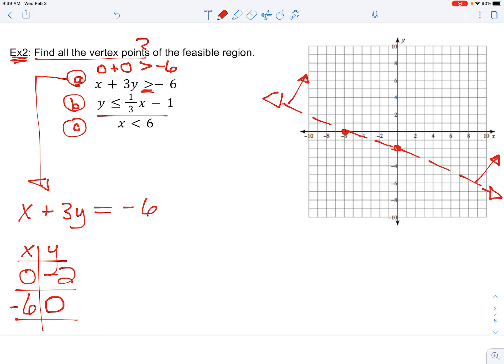The y-intercept is negative 1. And then 1 third is the slope. Rise over run. 3 over, 1 up. 3 over, 1 up. Or 1 down, 3 to the left.